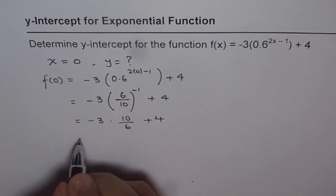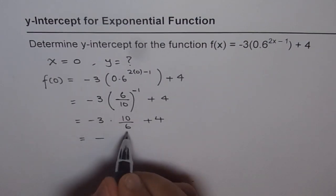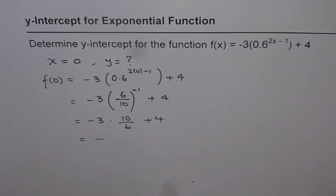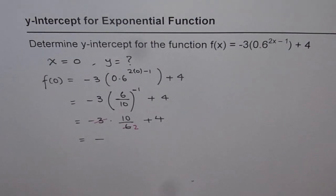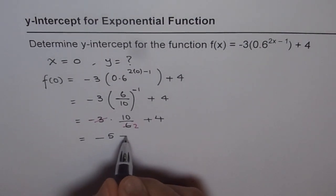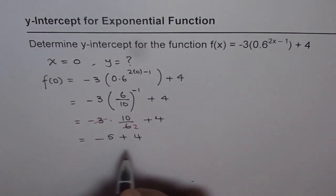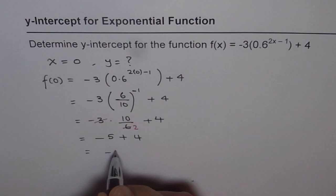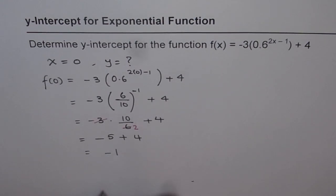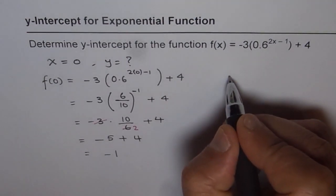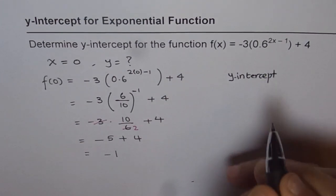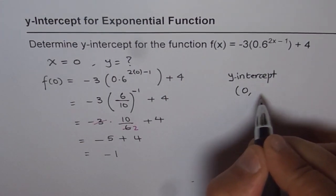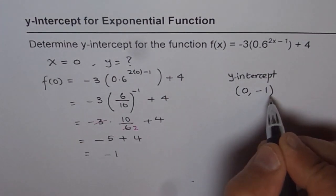Now, 10 over 6 — you can divide: 3 goes into 6 two times, so you get minus 5 plus 4. And minus 5 plus 4 is indeed minus 1. So we get the y-intercept: x-value is 0 and the y-value is minus 1.